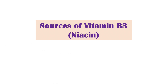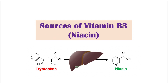We can also get niacin from endogenous synthesis, meaning we make it inside our own bodies. This occurs through hepatic synthesis — synthesis in our liver — where vitamin B3 is synthesized from tryptophan. This process also requires riboflavin.